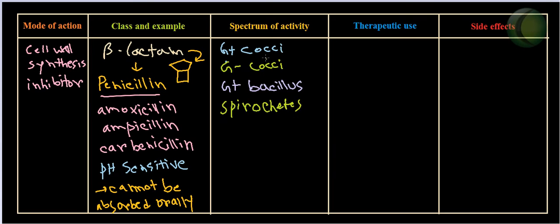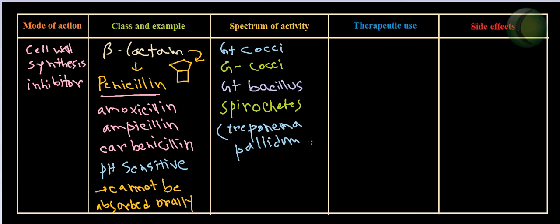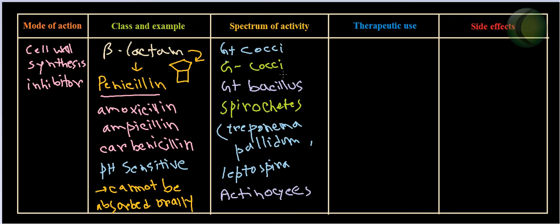Penicillin can also go against spirochetes — examples include Treponema pallidum and Leptospira. It can also act against actinomycetes. So you can see the variety and versatility of this antibiotic: it covers gram-positive cocci, gram-negative cocci, gram-positive bacilli, spirochetes, and actinomycetes — a very broad range.